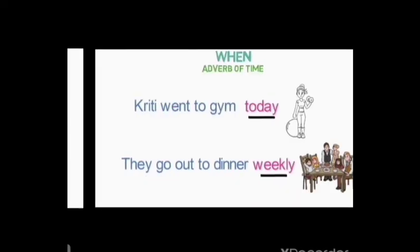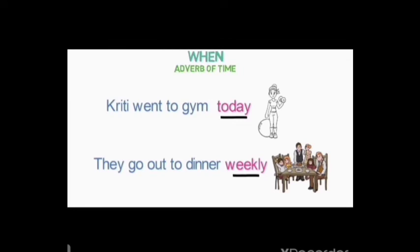Now let's look at the way we describe when exactly an action happened. 'Keerti went to the gym today.' Here we know that Keerti went to the gym, but when she went — today. So 'today' is an adverb here. 'They go out to dinner weekly.' The word 'weekly' tells us when they go to dinner. As this adverb describes when the action exactly happened, these are called adverbs of time.